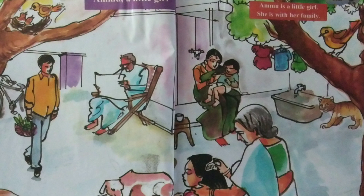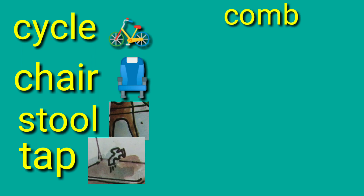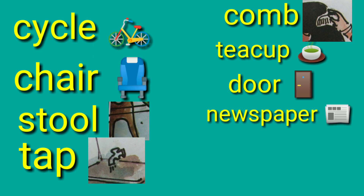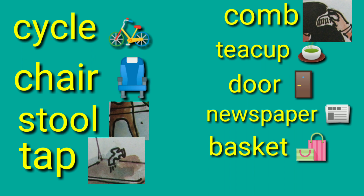What are the things we see in this picture? We see a cycle, stool, tap, comb, teacup, door, newspaper, basket, and nest.